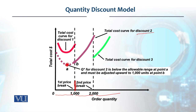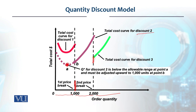After adjusting accordingly, in that case either it will be a 1,000-unit order, or a 2,000-unit order, or an order between 0 and 1,000 — whichever minimizes the total cost will be the optimal choice.